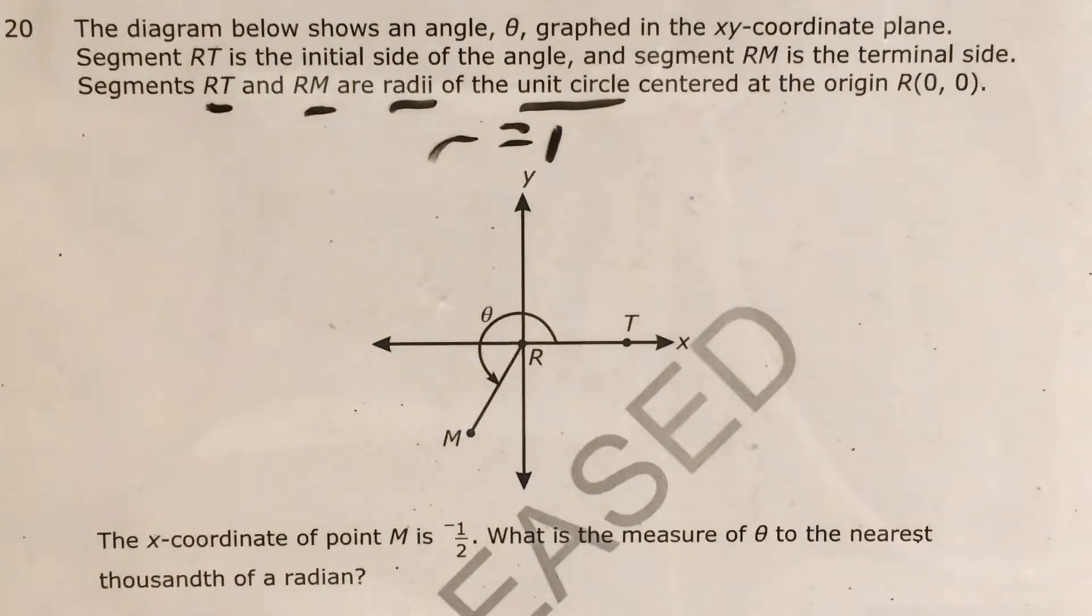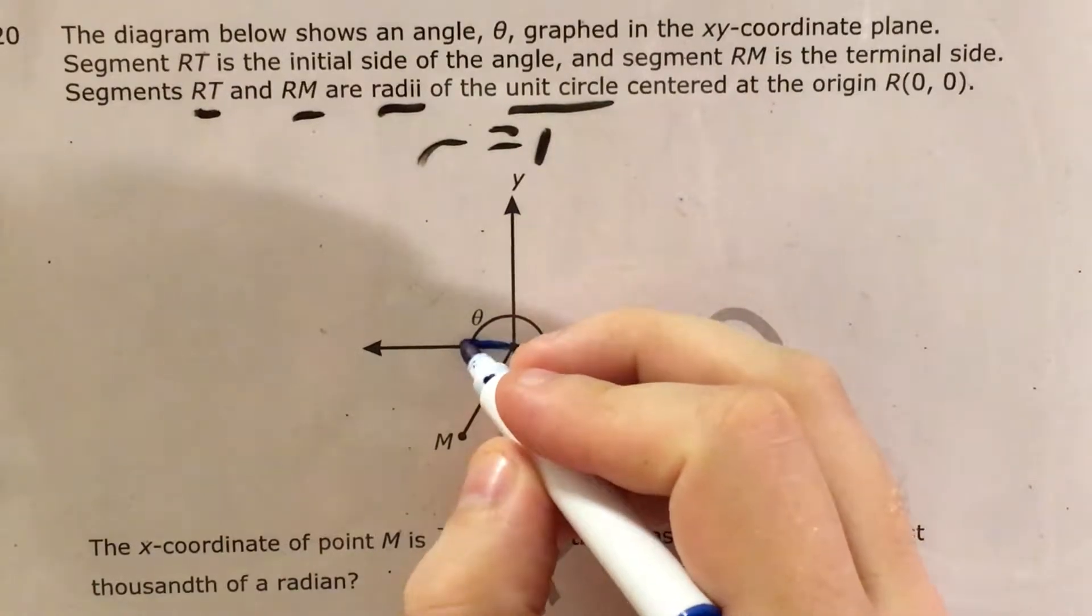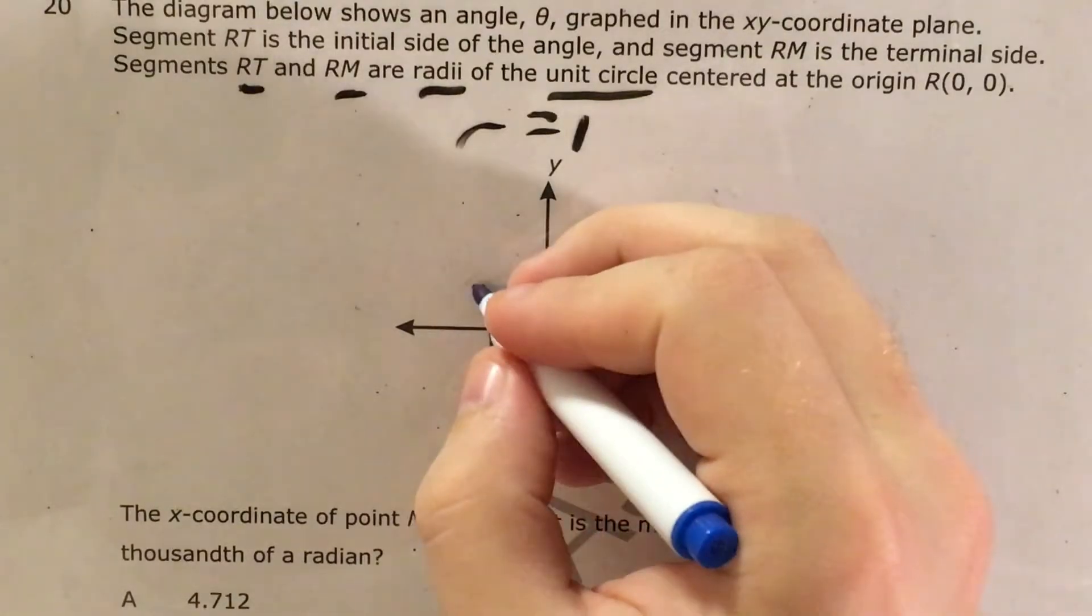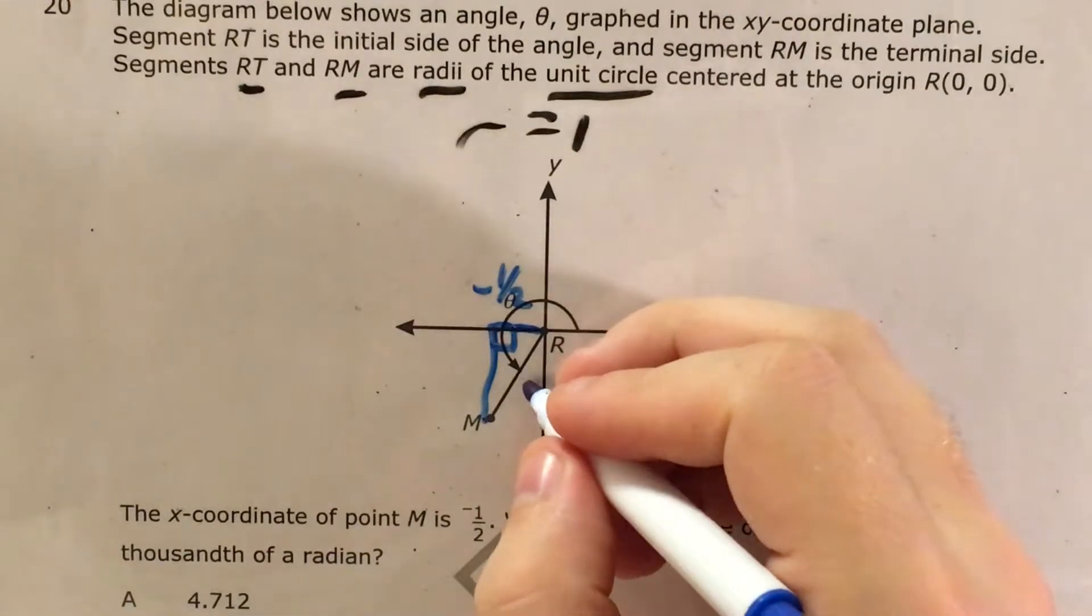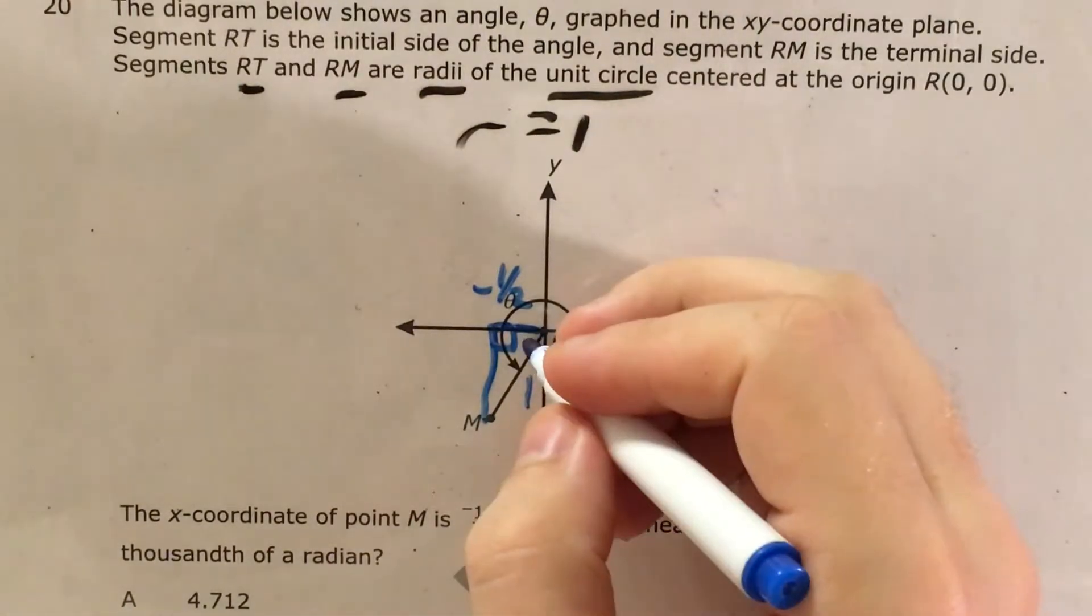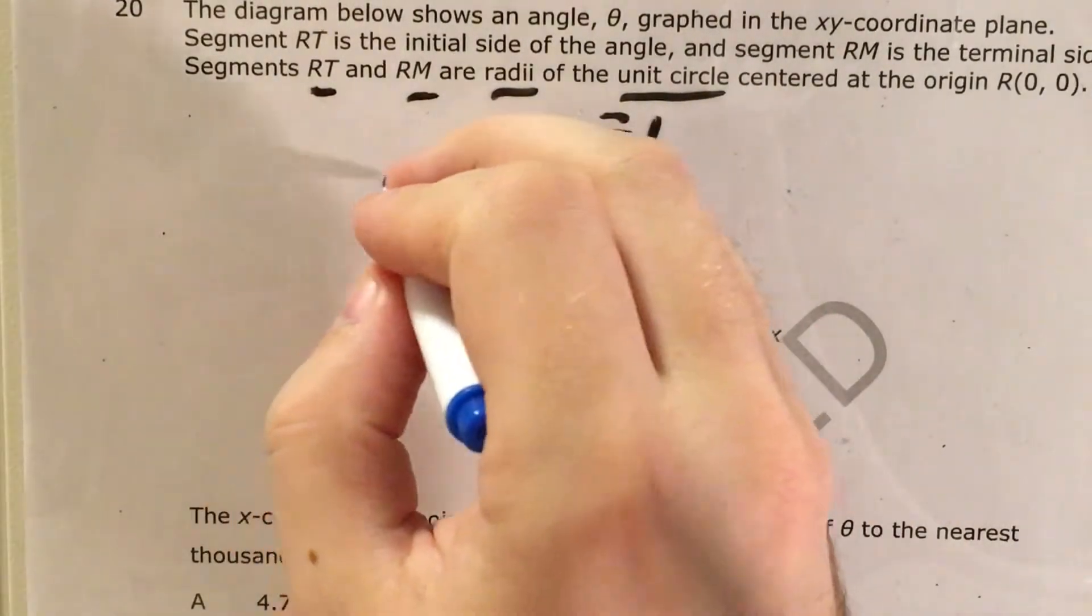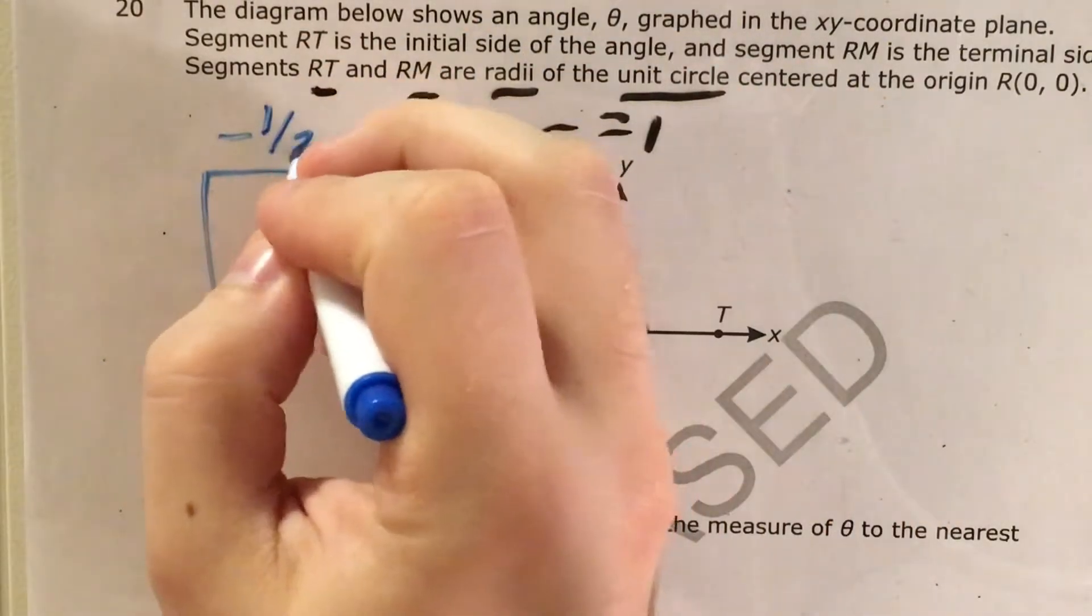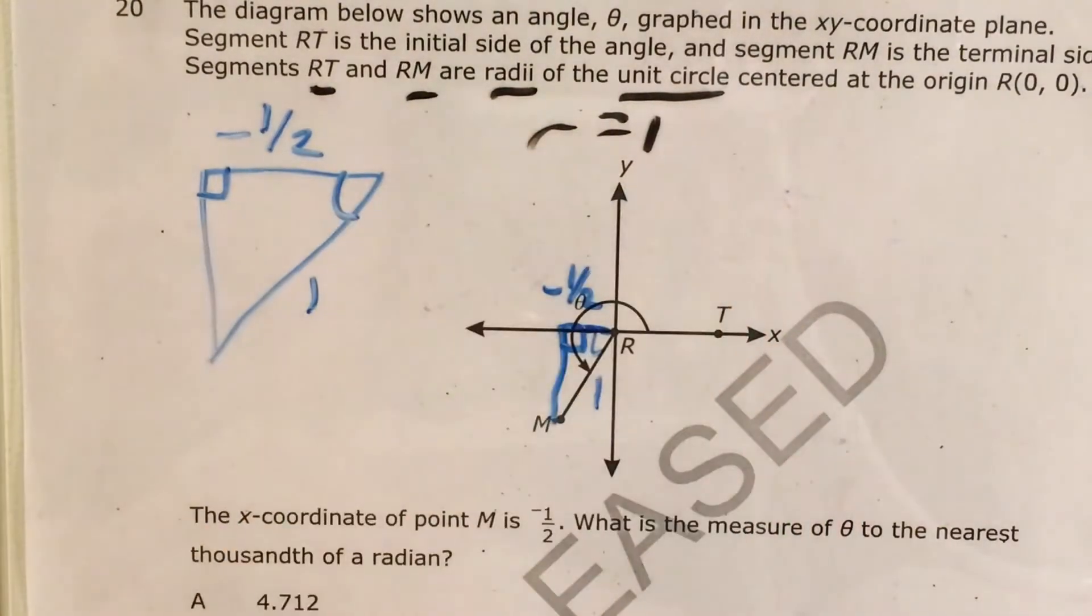Let me get out one of my tiny markers and draw just this triangle here, just this right triangle. It says the x-coordinate of point M is negative 1 half, and since it says that RM is a radius of the unit circle, I know that this length is 1, and I'm trying to find this angle. So let me go ahead and actually draw this so that it's larger and we can see what's going on a little better. So this is negative 1 half, this is 1, this is a right triangle, and we're trying to find this angle.